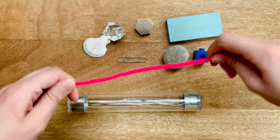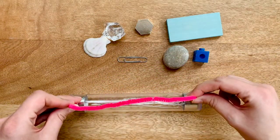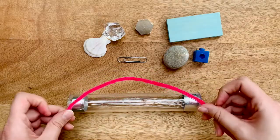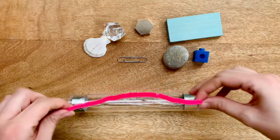The metal part of the pipe cleaner conducts electricity, but the fuzzy part does not. Just the metal is the conductor.